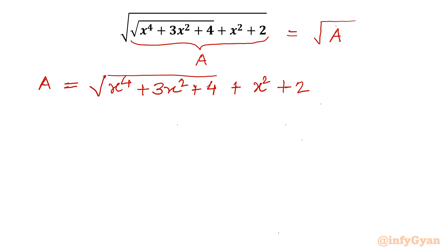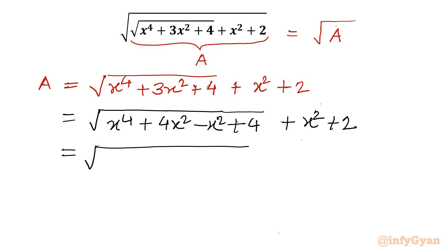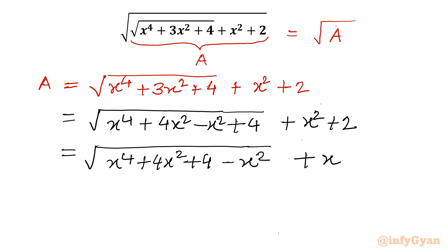Now I will consider this 3x squared term as 4x squared minus x squared. So I will write x to the power 4 plus 4x squared minus x squared plus 4, and then we are having x squared plus 2 without the square root.